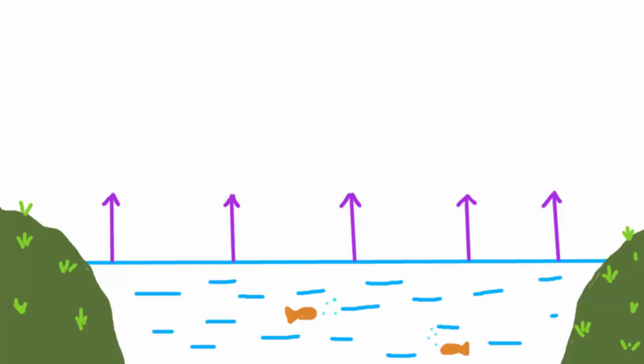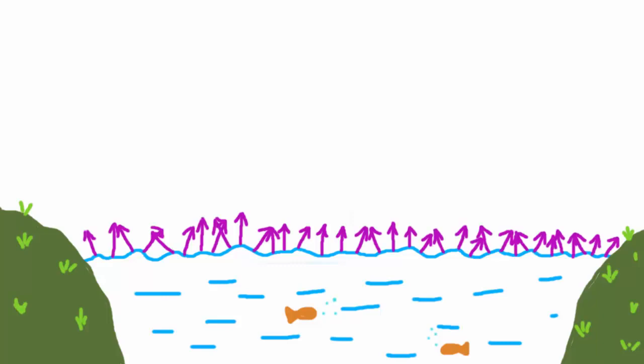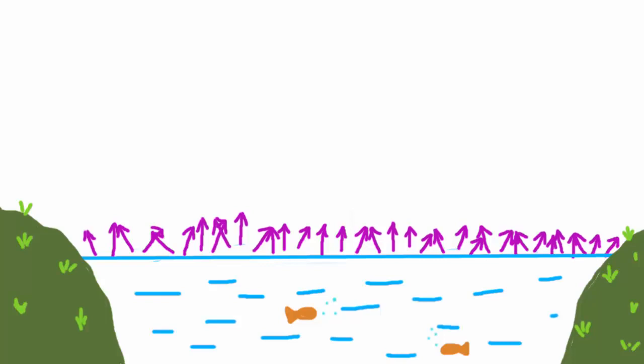If our water model was more realistic it would have normals that look something like this. So what we're going to do is just pretend that our water model is realistic and use normals like this even though our water is actually completely flat. By using these normals that are all over the place it will make the lighting act as if the water was actually bumpy and realistic. But we still need to generate these normals from somewhere, and that's where the normal map comes in.